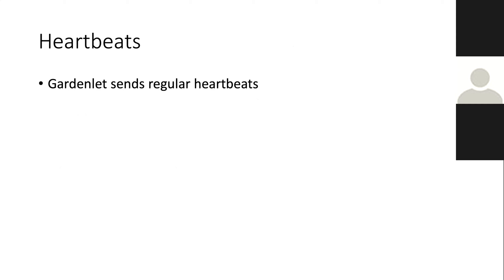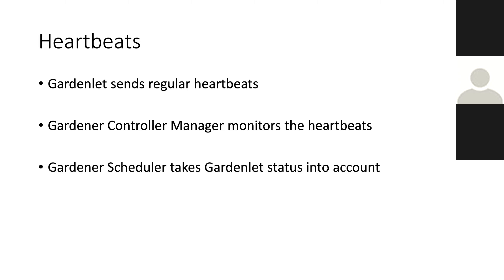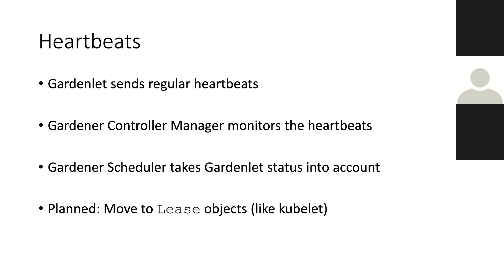Like kubelet heartbeats, the Gardenlet sends heartbeats to the garden control plane approximately every 20 seconds. The Gardener controller manager observes and monitors the heartbeats. The Gardener scheduler also takes the Gardenlet status — basically the seed status — into account when shoots are to be scheduled. Martin already suggested moving to lease objects, as there was a Kubernetes enhancement proposal for kubelet heartbeats, and we also plan to do the same.